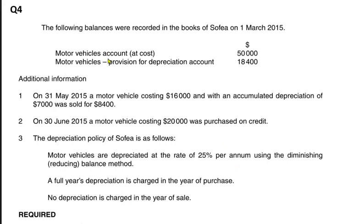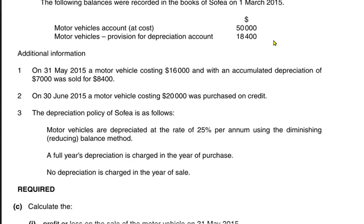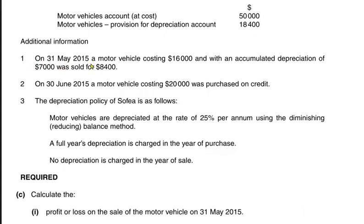The following balances were recorded in the books of Sofia on 1st March 2015 — these are the opening balances. Motor vehicles cost 50,000, and the provision for depreciation (total accumulated depreciation) is 18,400. In Note 1, a motor vehicle that cost 16,000 had accumulated depreciation of 7,000 at the date of disposal, and was sold for 8,400. On 30th June 2015, a new vehicle was bought for 20,000 on credit.